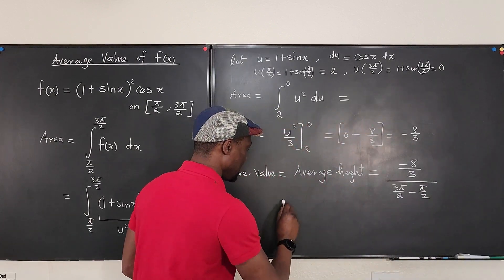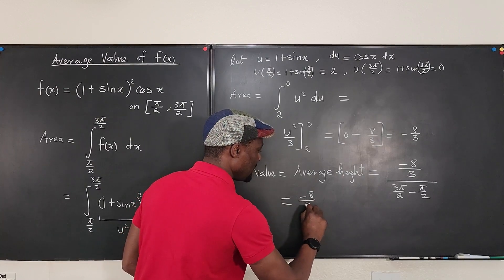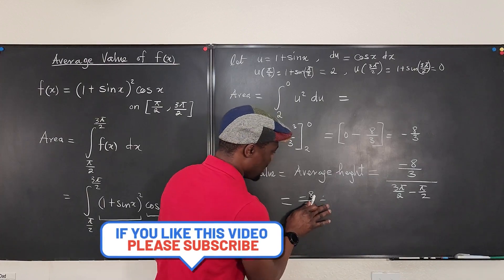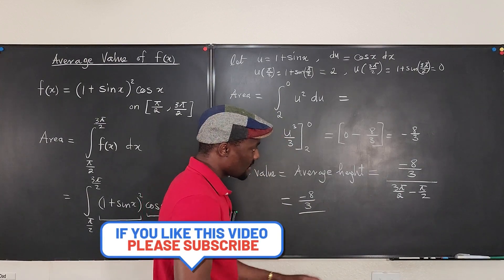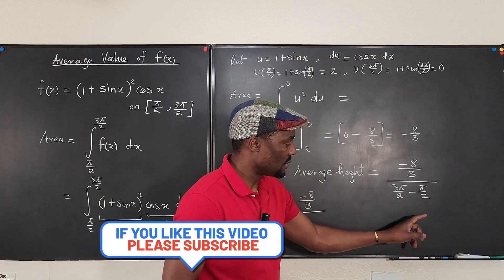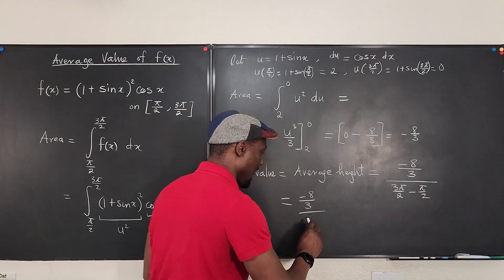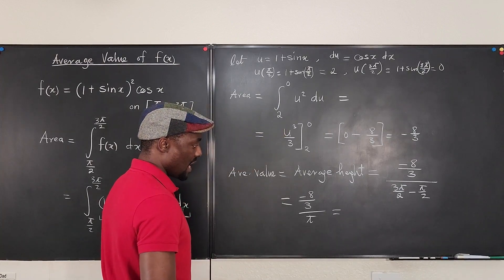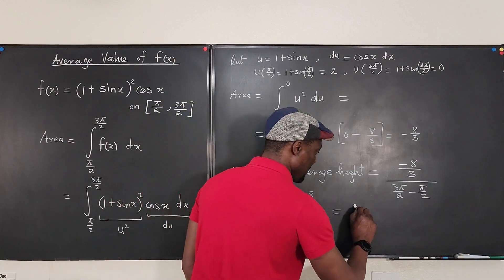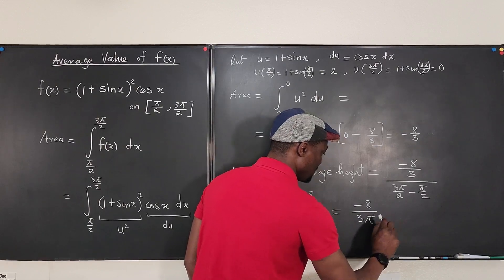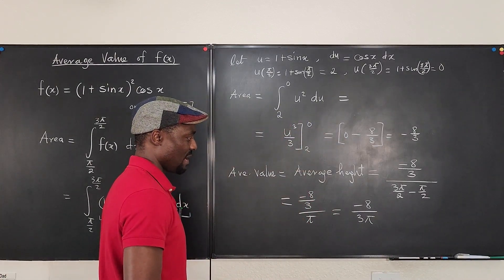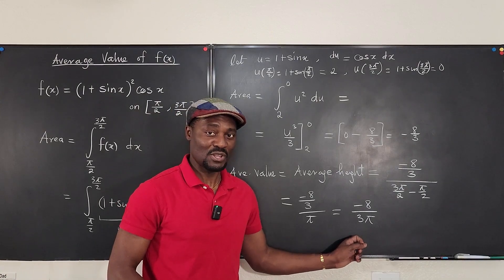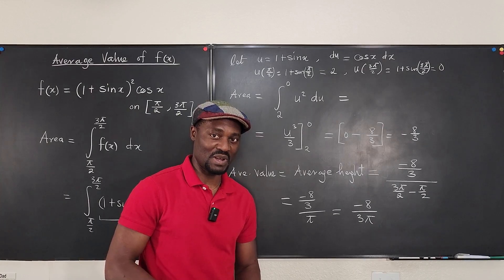So, what's that? That's going to be divided by 3 pi over 2 minus pi over 2. It looks like here we got minus 8 over 3 divided by - let's put the number here - 3 pi over 2 minus 1 pi over 2. That's 2 pi over 2, which is just pi. Divided by pi. This gives us minus 8 over 3 pi. Doesn't look as nice as I expected, but that is the average value of this function. Never stop learning, because those who stop learning have stopped living. Bye-bye.